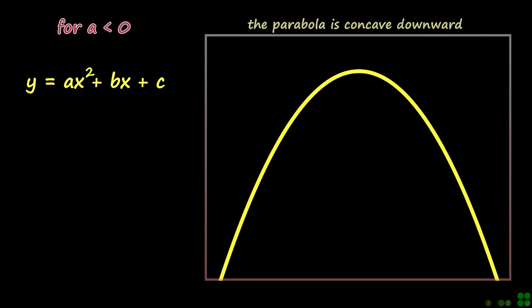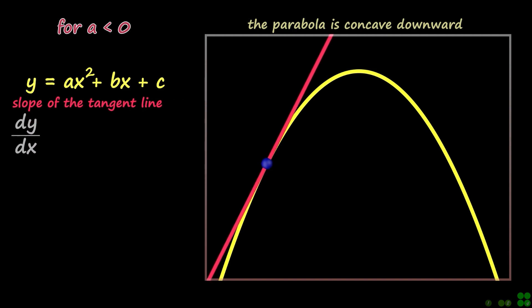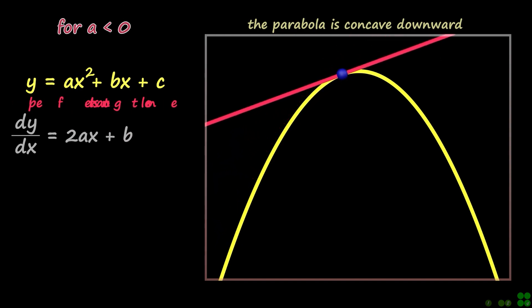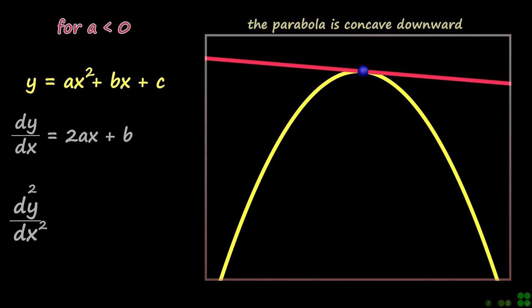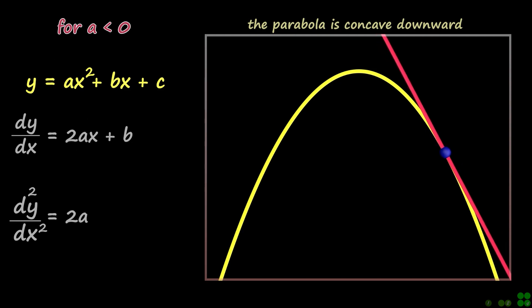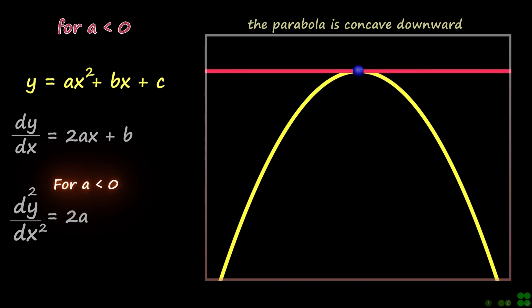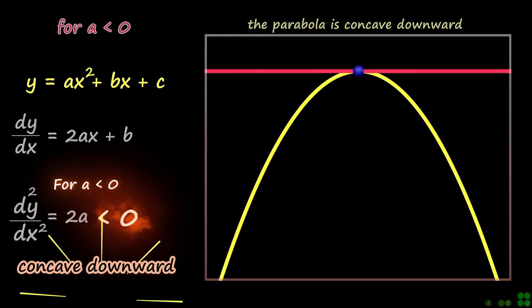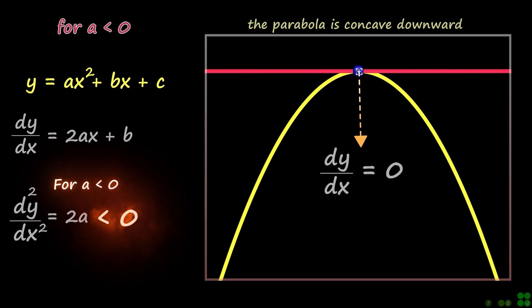If a is negative, then the graph of the function is a parabola that is concave downward, as shown. The slope of the tangent line to the function is equal to its first derivative. For a value of a being less than zero, note that the second derivative of the quadratic function is also negative. Observe that at the maximum point, the slope of the tangent line is zero. Therefore, the first derivative of the function is zero at that point.